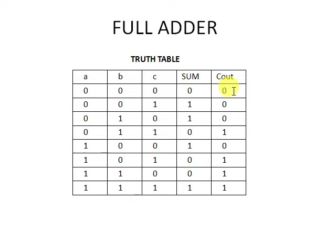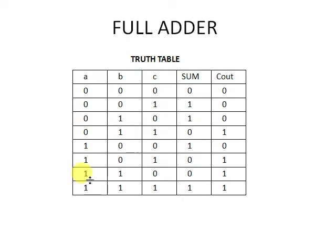For C-out, the shortcut is: if any two inputs are the same value — both zero or both one — the output reflects that. For example, when A, B, and C are all zero, C-out is zero. When A and B are zero and C is one, C-out is still zero, because two inputs are the same zero. When A and B are both one, C-out is one.